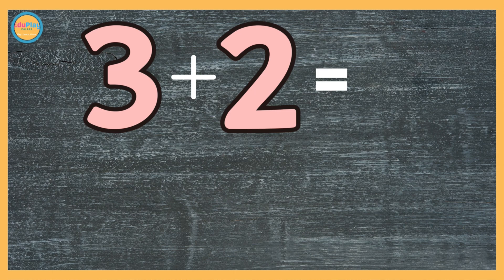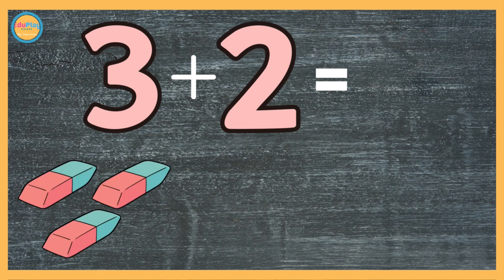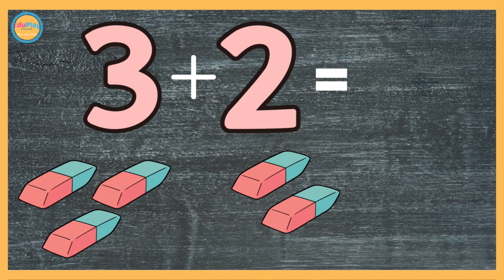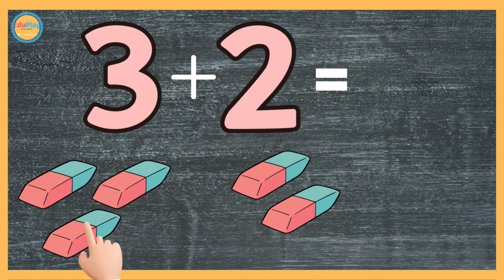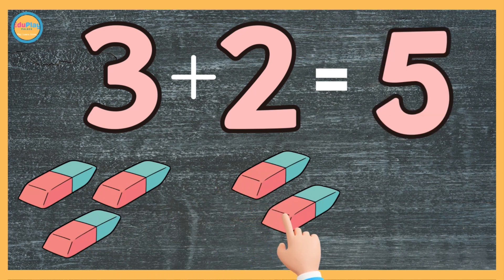3 plus 2. 1, 2, 3. 1, 2. Let's count together. 1, 2, 3, 4, 5. 3 plus 2 makes 5.